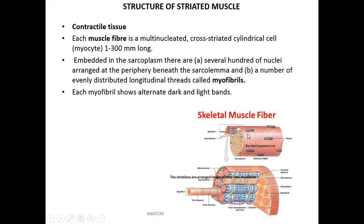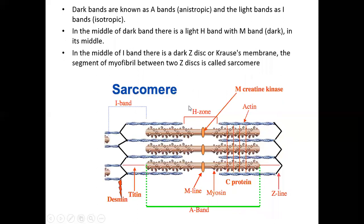Inside the muscle fiber there are myofibrils, which can be seen as dotted areas. Each muscle fiber contains myofibrils arranged in bundles. A close view of a myofibril shows myosin and actin filaments. In some areas only myosin is present, in others myosin and actin are seen together, and at another point actin filaments are attached to one another.